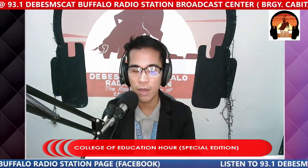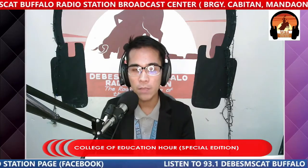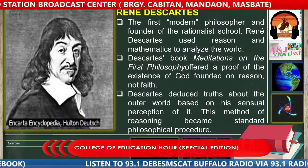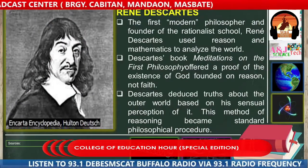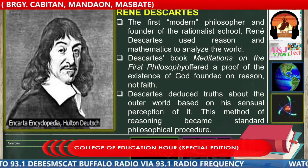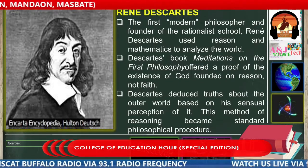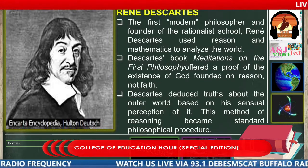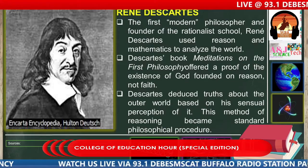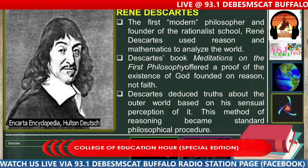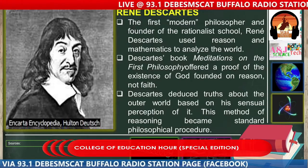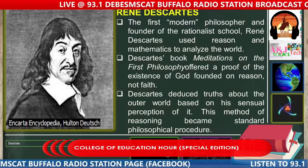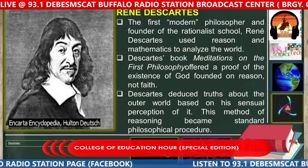Next is René Descartes, the first modern philosopher and founder of the rationalist school. Descartes used reason and mathematics to analyze the world. His book 'Meditations on the First Philosophy' offered a proof of the existence of God founded on reason, not faith. Descartes deduced truth about the outer world based on his sensual perception of it. This method of reasoning became standard philosophical procedure.